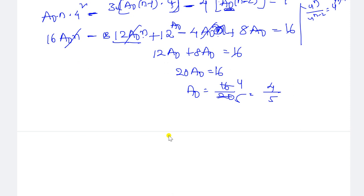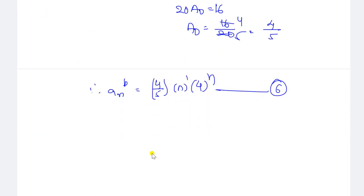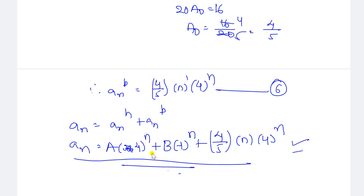Substituting a₀ = 4/5 into the particular solution, a_n^p = (4/5)·n·4^n. Combining homogeneous and particular solutions, the final solution is: a_n = A·4^n + B·(-1)^n + (4/5)·n·4^n. This is the complete solution for this non-homogeneous recurrence relation.